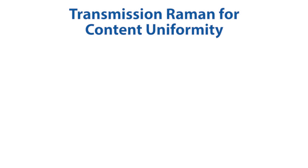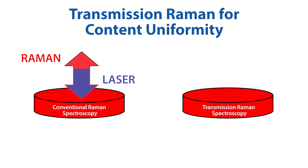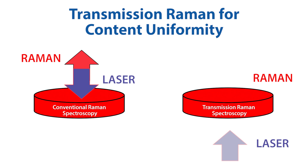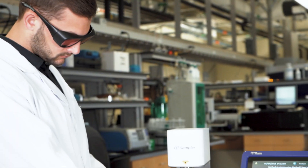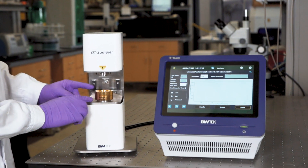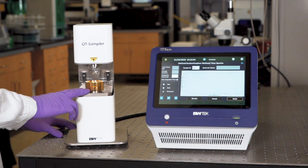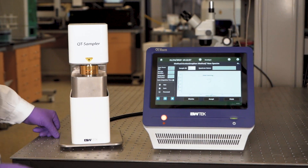Compared to the conventional technology used for content uniformity measurements, the QT Ram offers non-destructive, real-time analysis without consumables or sample preparation. Additionally, the QT Ram's small footprint allows users to make quantitative measurements either at line or in the lab.